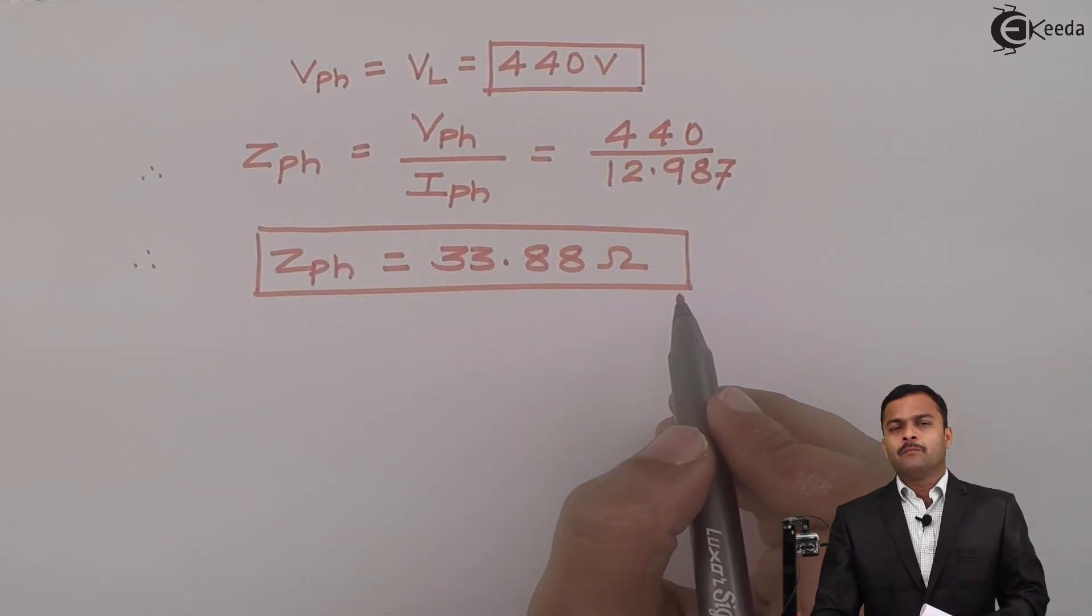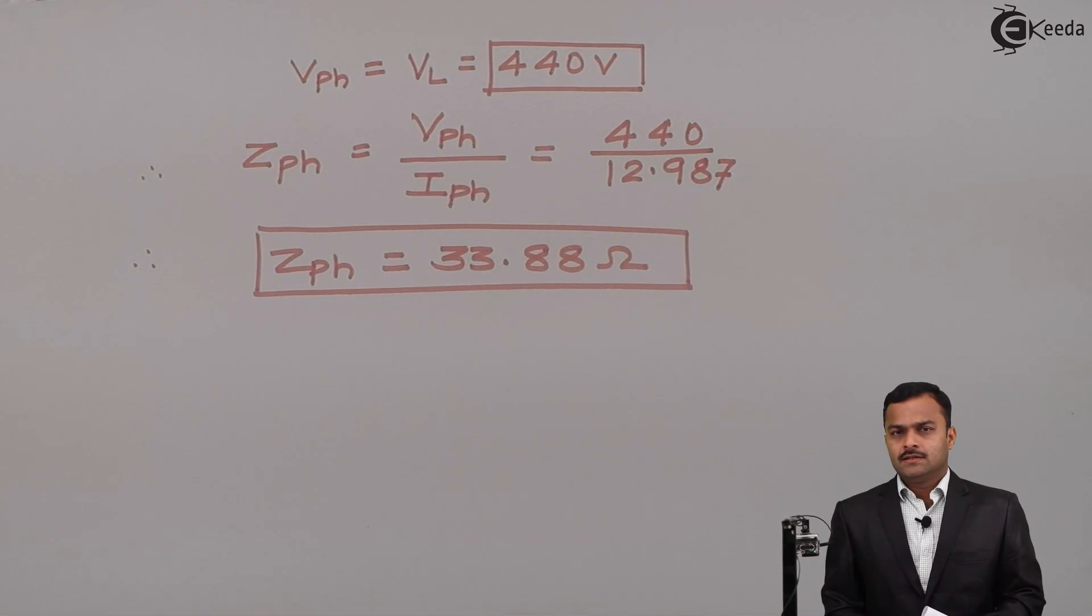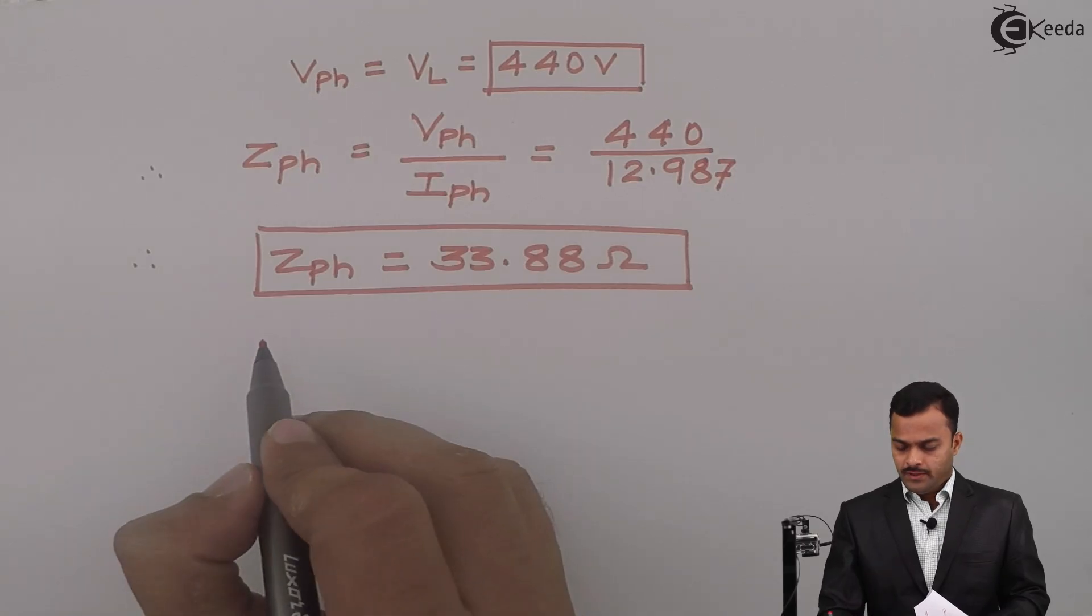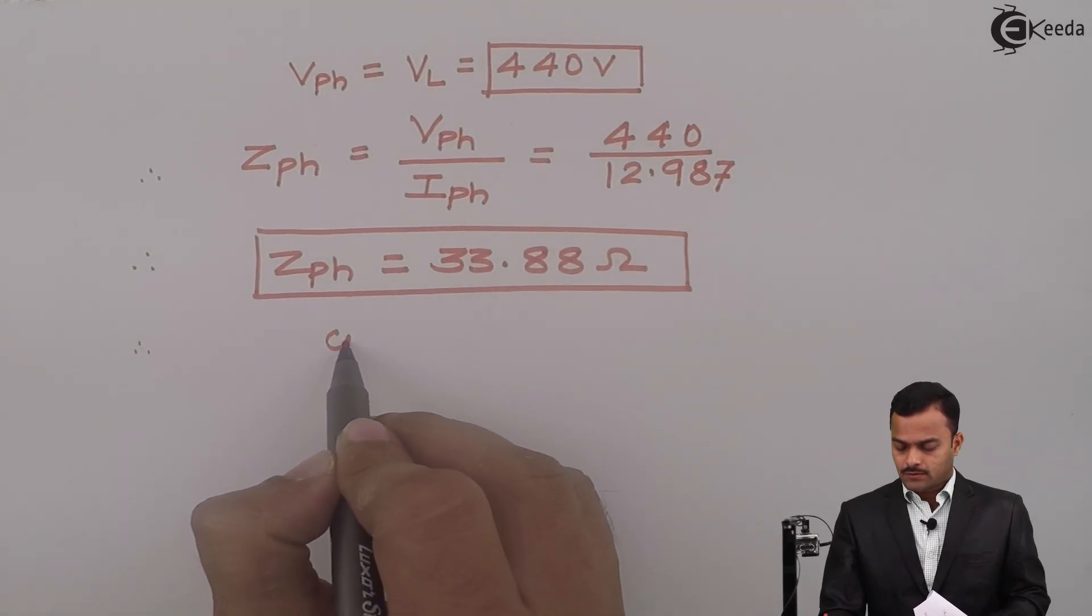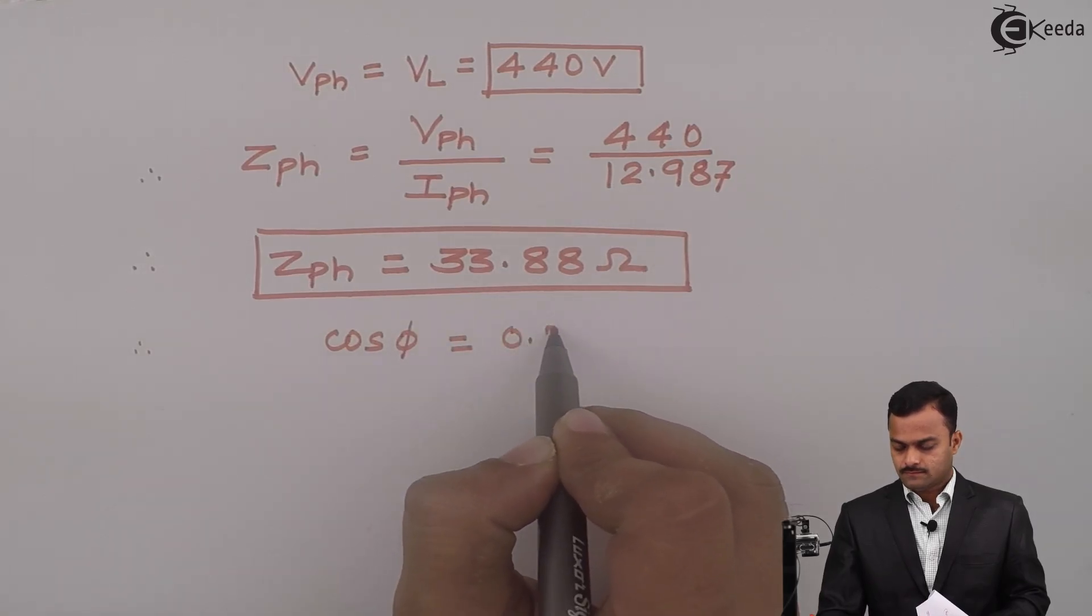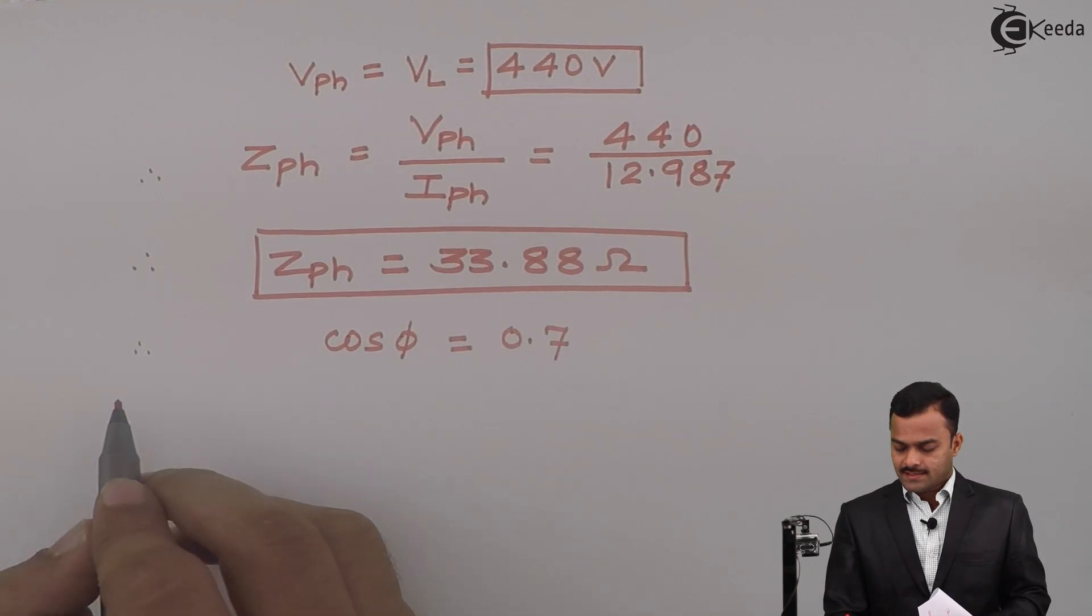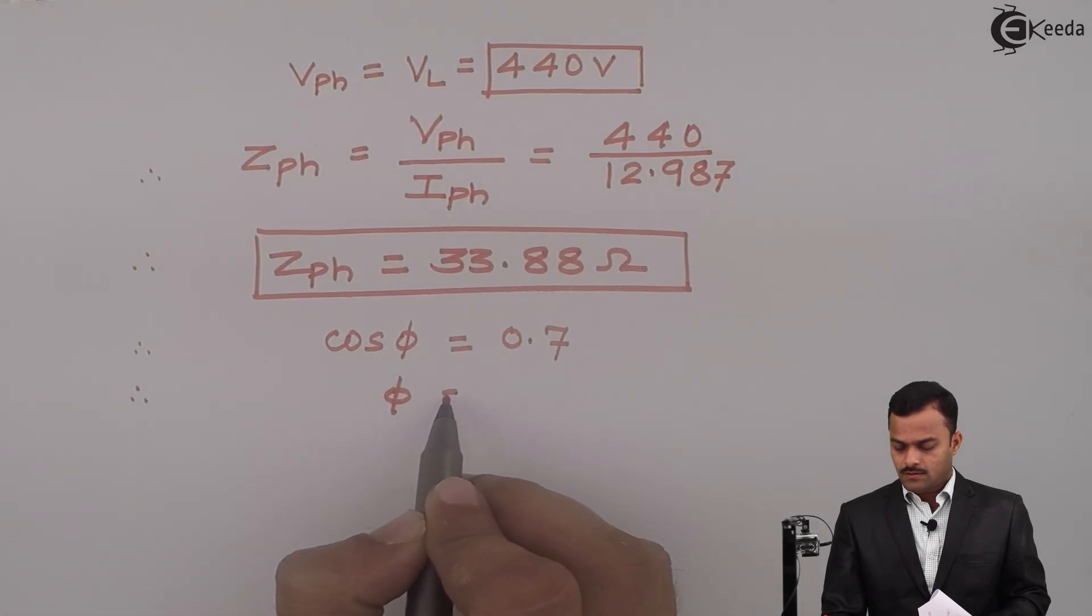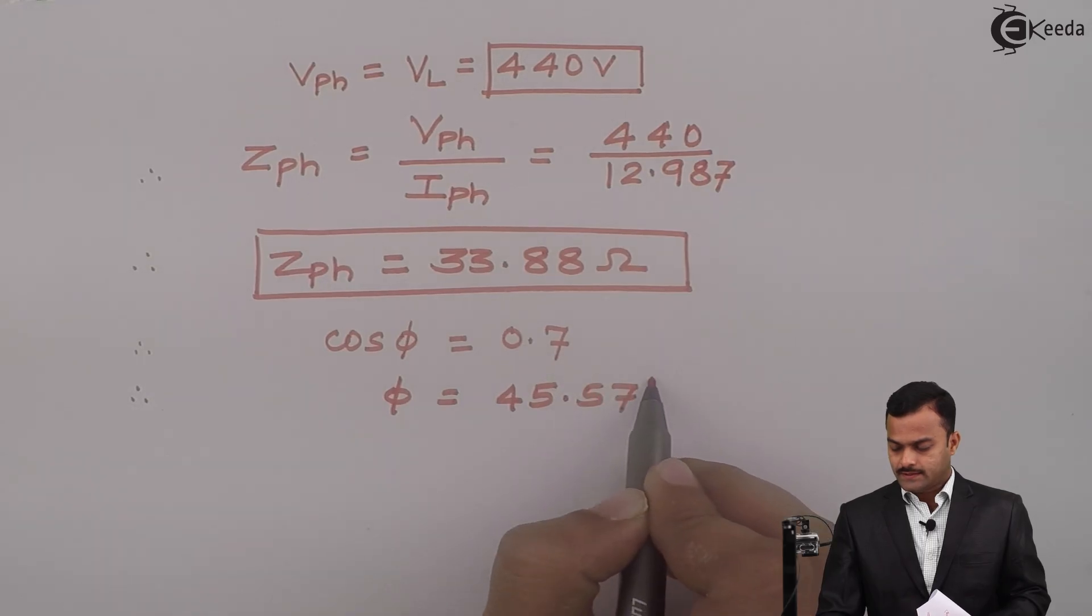It is just the magnitude of ZPh. We know power factor cos phi is 0.7, so from this I can get phi equal to 45.57 degrees.